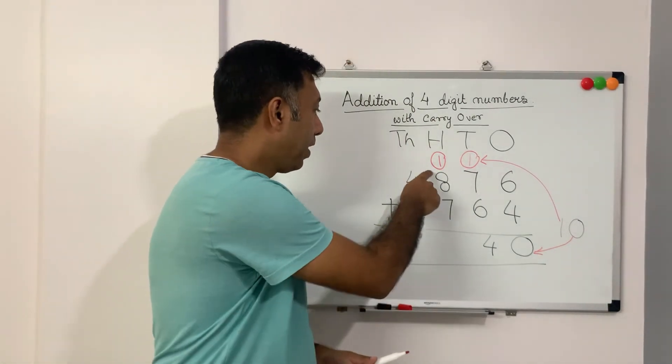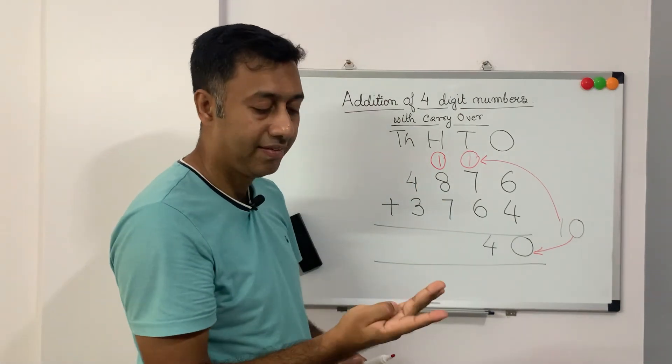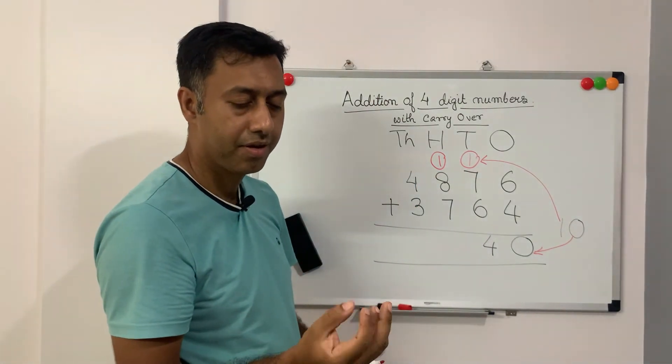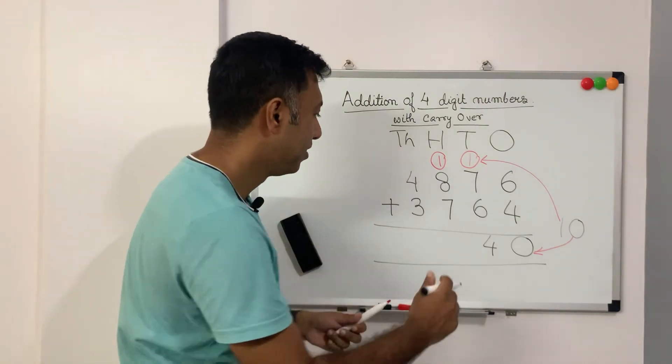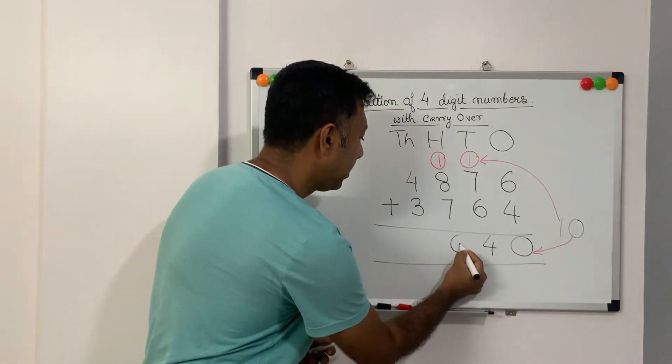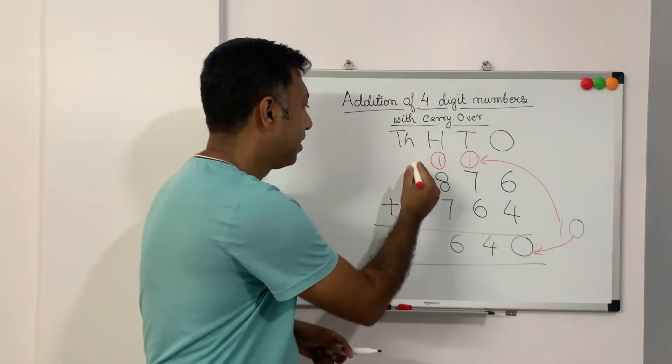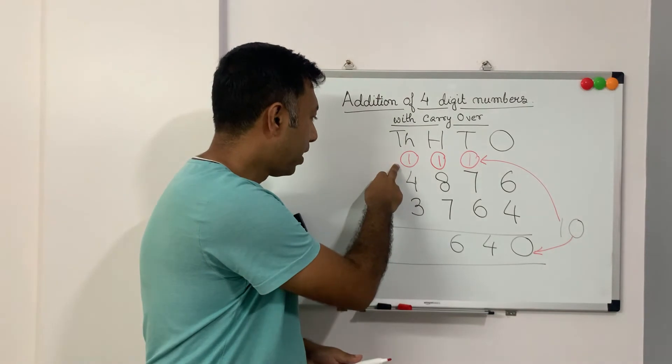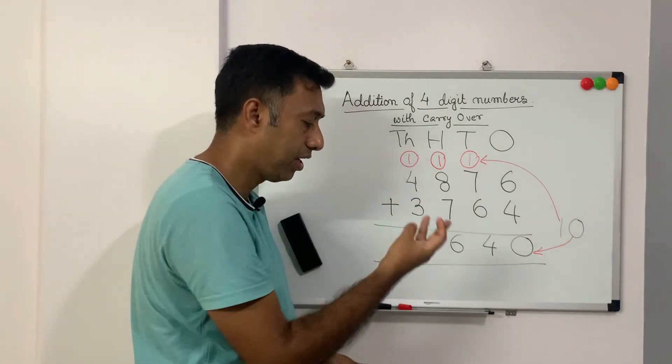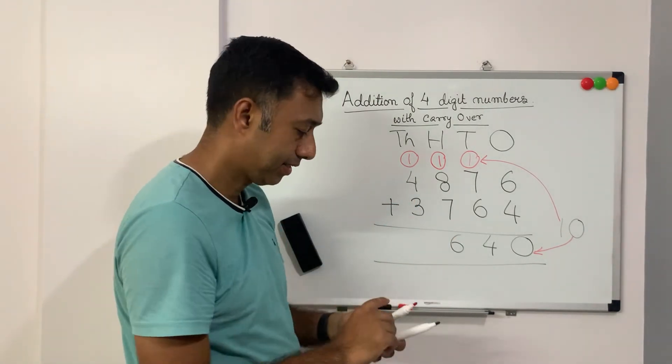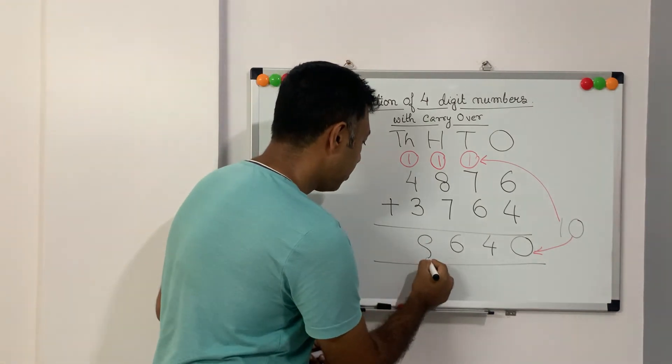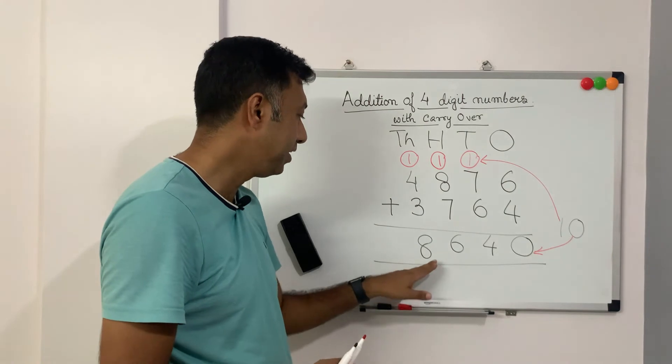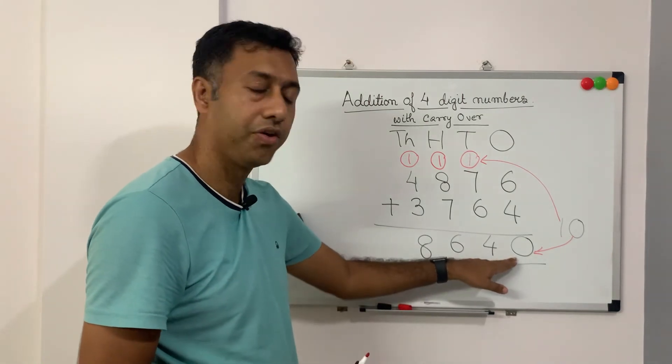So now 8 plus 1 is 9 plus 7 is 16. So we will write 6 here. And again the 1 goes here. So now 4 plus 1 is 5 plus 3 is 8. So our result is the total is 8640.